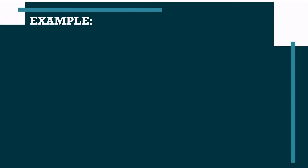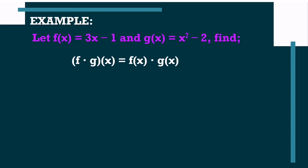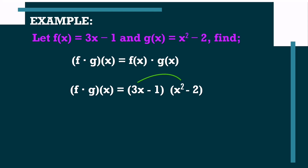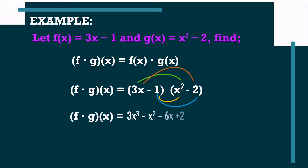Moving on, let's find the product of f of x and g of x. So, we write f times g of x is equal to f of x times g of x. Substitute the values: f times g of x is equal to 3x minus 1 times x squared minus 2. Now, we are going to apply the distributive property of multiplication — multiply 3x to x squared and negative 2, then multiply negative 1 to x squared and to negative 2. The result will be 3x cubed minus x squared minus 6x plus 2. As you can see, we have no similar terms, therefore this is already our final answer.